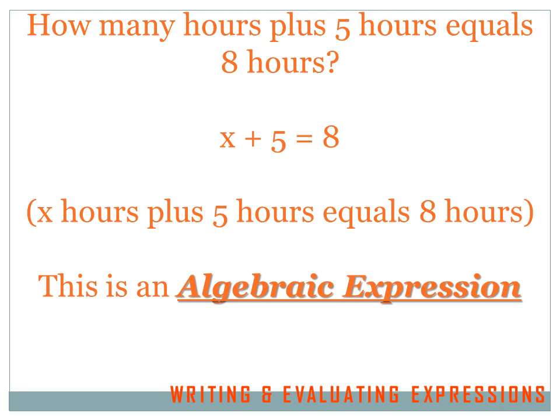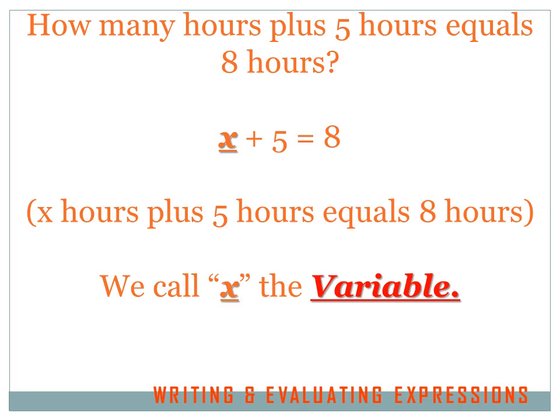How about this one? How many hours plus five hours equals eight hours? X plus five hours equals eight hours. The X is the variable, and if you see an X in an expression, that means we have an algebraic expression. In an algebraic expression, the X is called the variable. The variable represents a number — it's the unknown number.